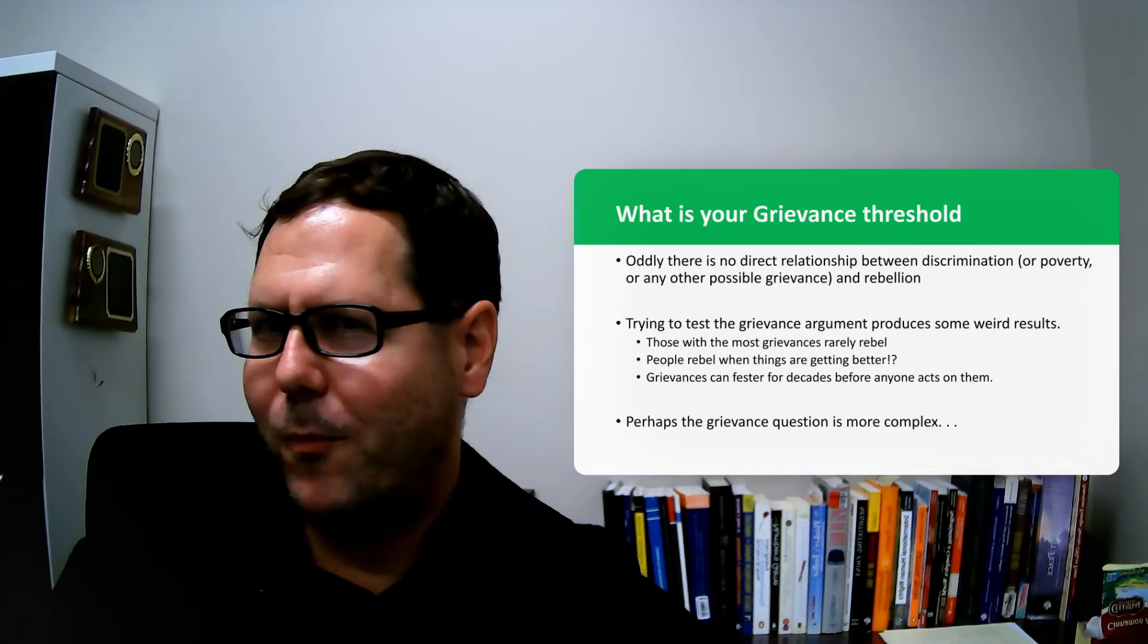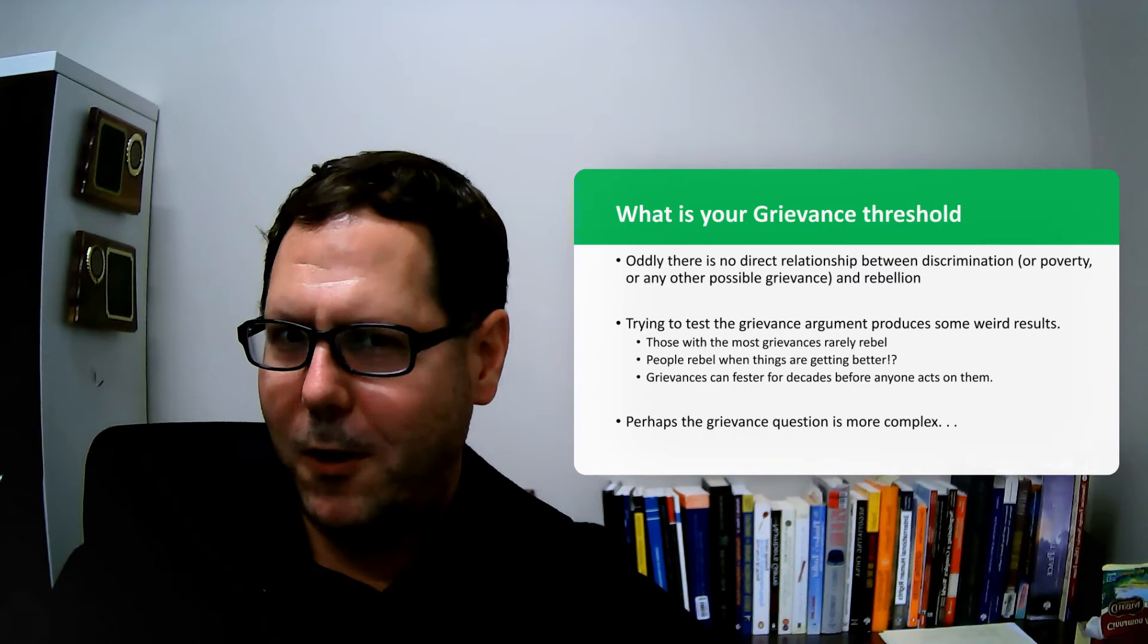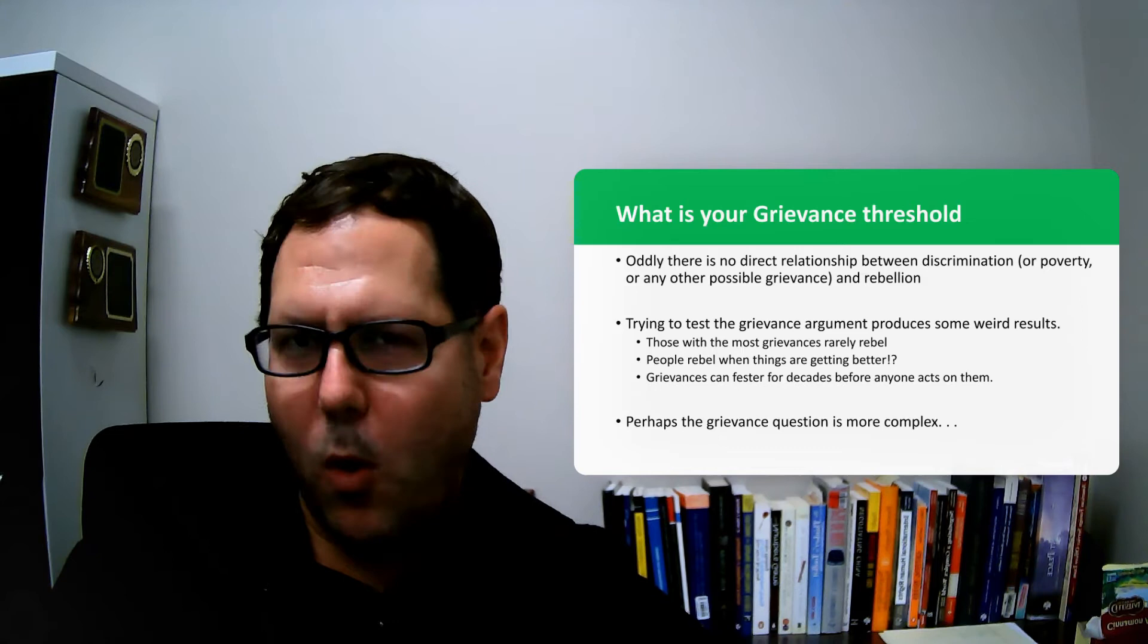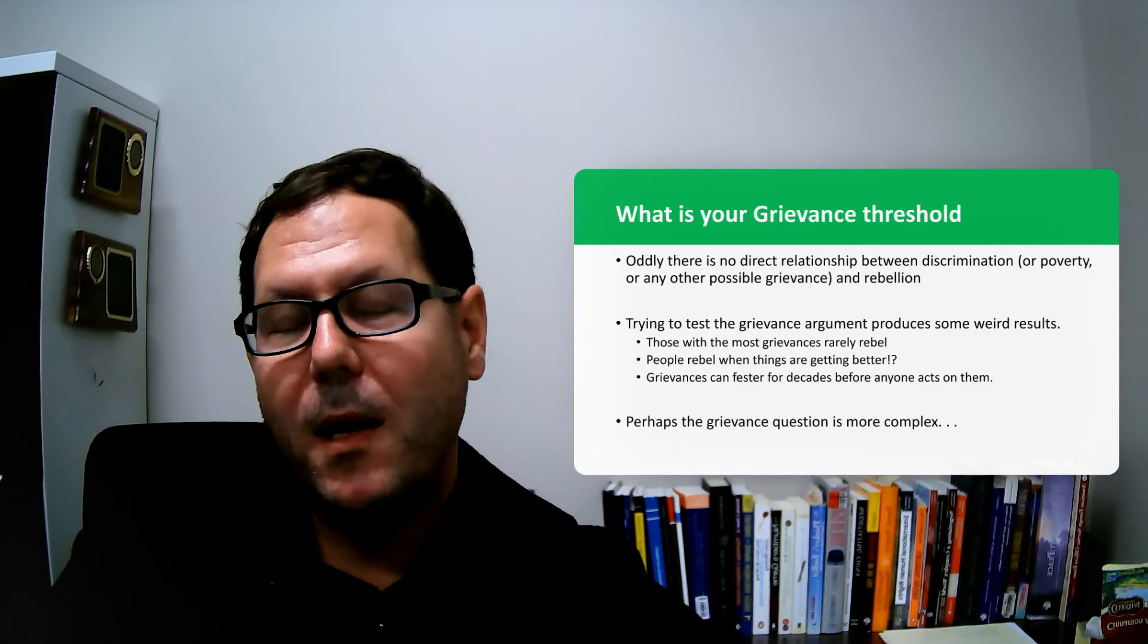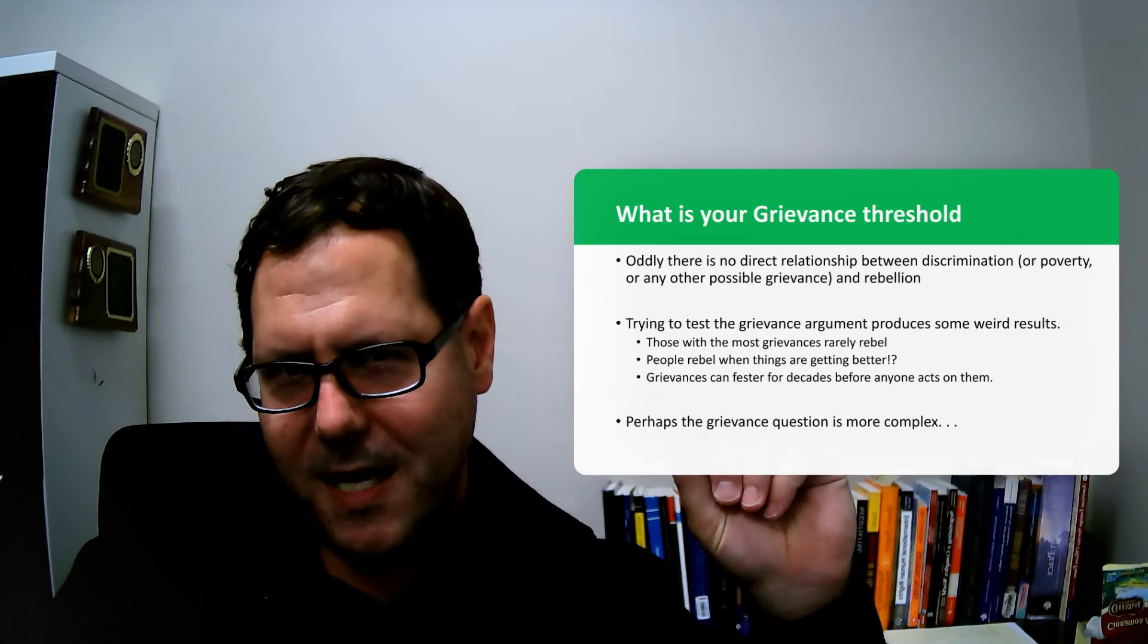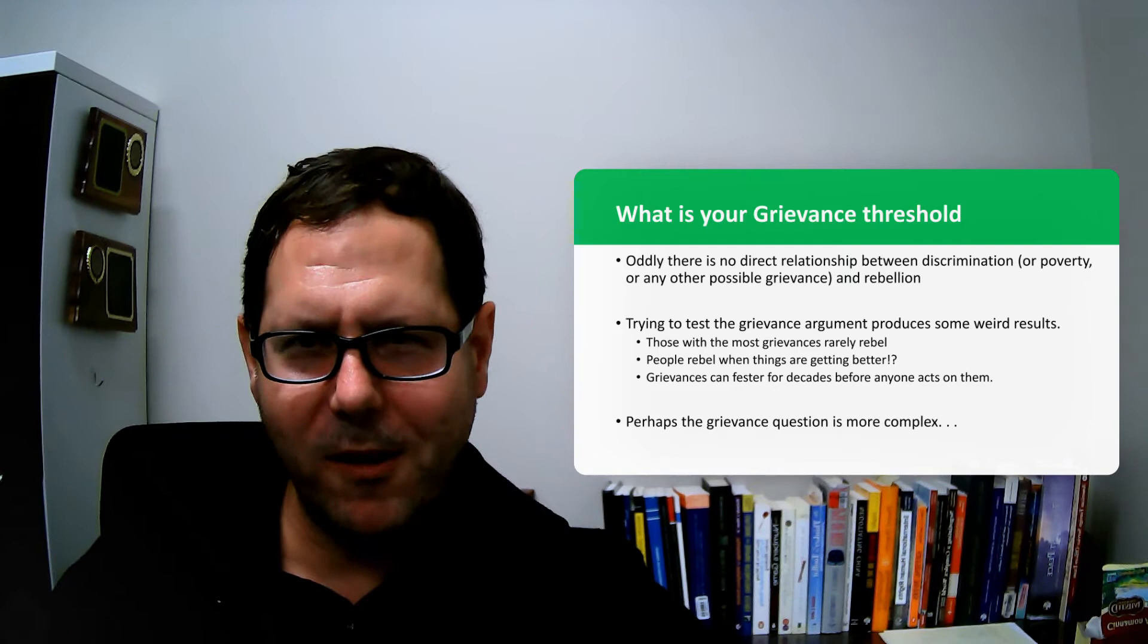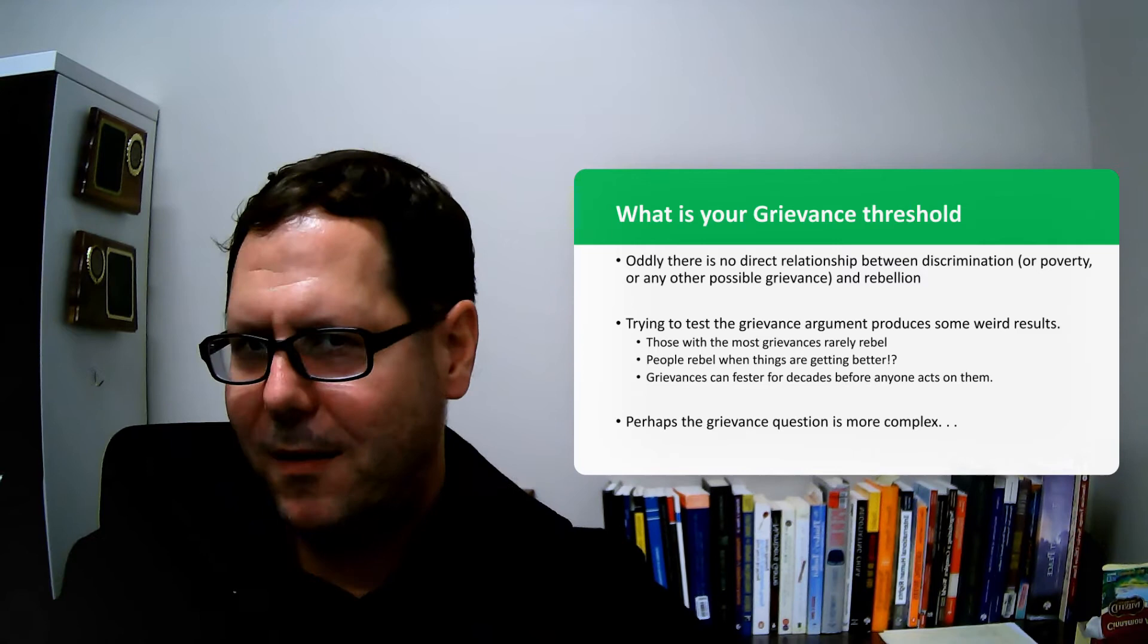We'll talk about this in a subsequent lecture, but one of the interesting things about the Civil Rights Movement in the United States is that African American political mobilization came at a time when quality of life for African Americans in terms of economic opportunities was actually going up, which raises the question: was it grievances motivating this or something else? A final piece that puzzles folks is that you can have grievances in place for decades and nobody acts on them, and then all of a sudden somebody does. Just like with primordialism, how do we explain that change if grievances were more or less constant?